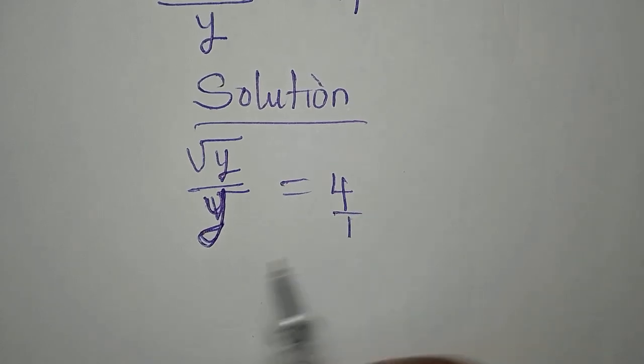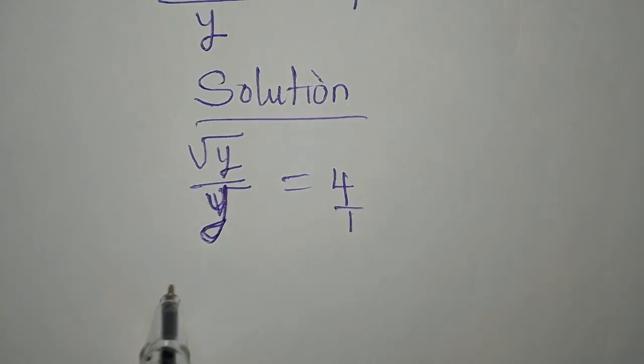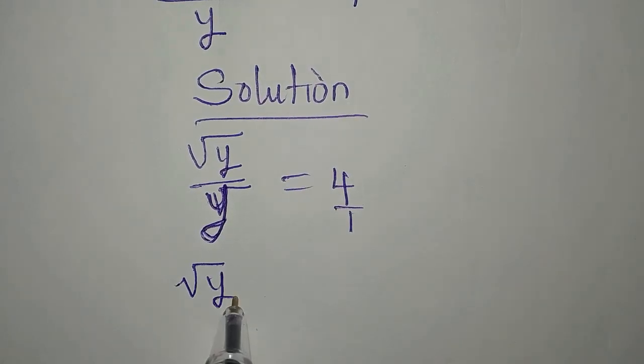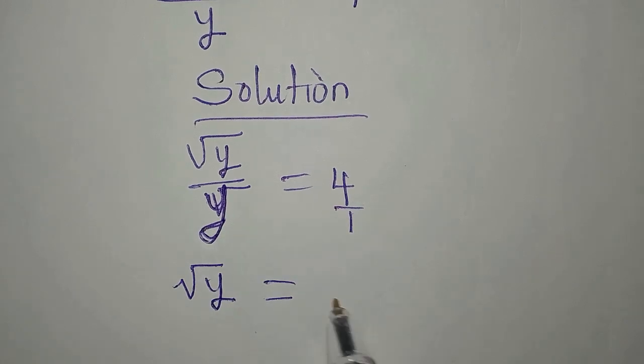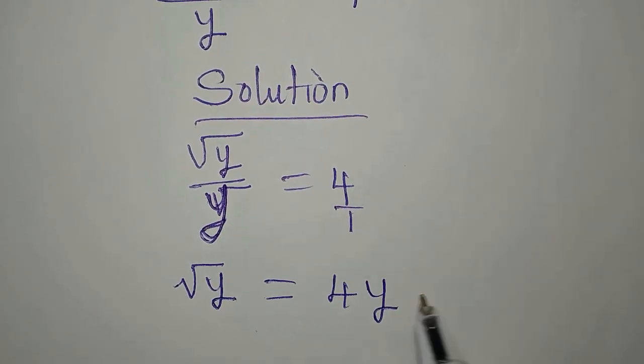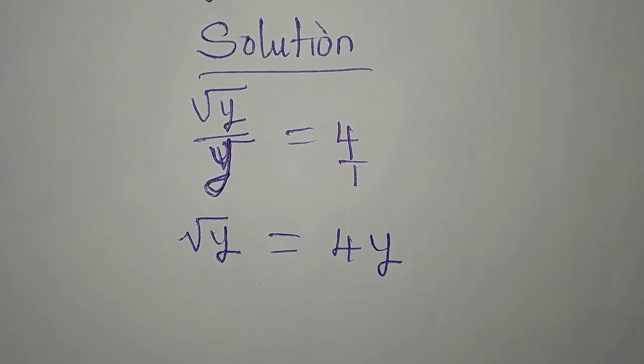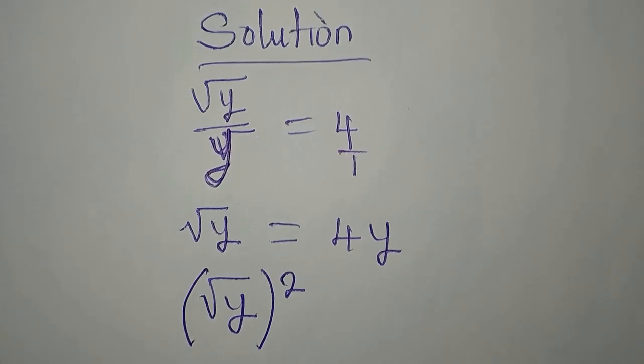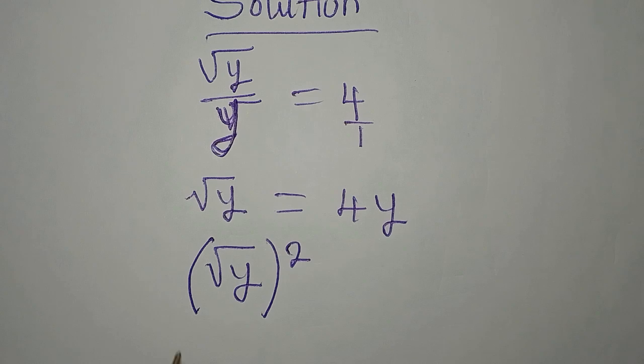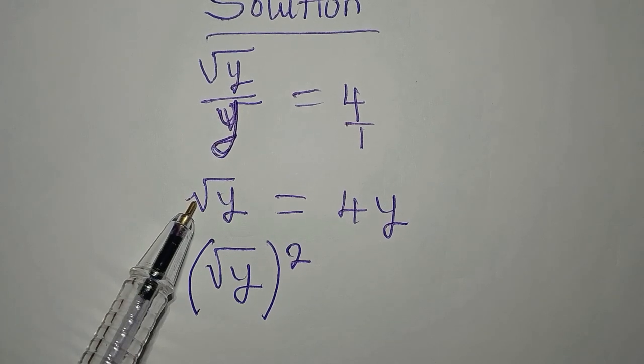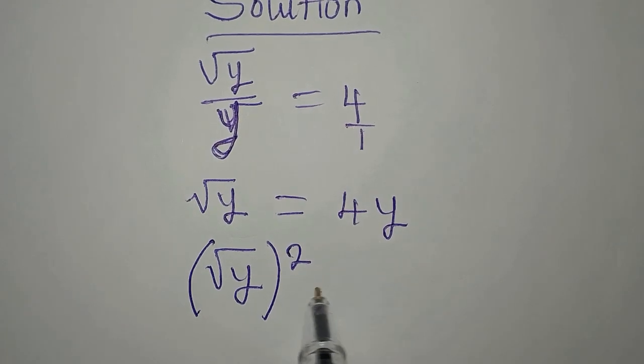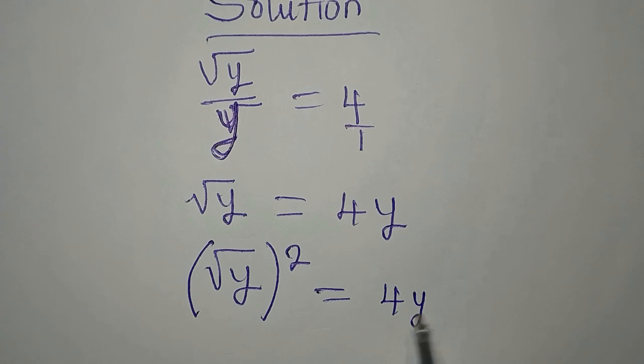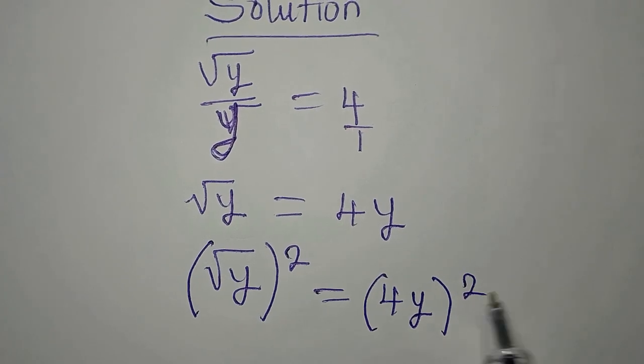What you will do is cross multiply. This will be square root of y, then y times 4 is 4y. Then the next thing is square both sides. Sometimes learners do not know when to square your sides when you're trying to remove the square root.